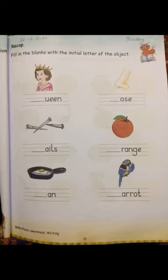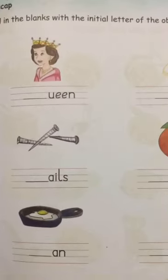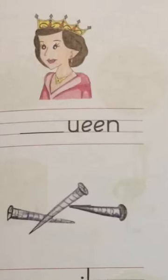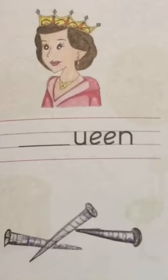Now come to page number 11. On page number 11, the question is: fill in the blanks with the initial letter of the object. Aapne word ka first letter likhna hai. Aapne picture se guess karna hai ke wo word kaunsa hai. The first one — queen.